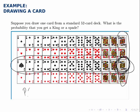So now we have to worry about the overlap. The probability of drawing a king or a spade is equal to the sum of their individual probabilities minus the overlap.